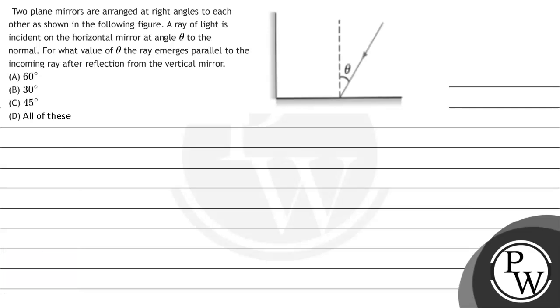Hello, let's read the question. The question says, two plane mirrors are arranged at right angles to each other as shown in the following figure. A ray of light is incident on the horizontal mirror at an angle theta to the normal. For what value of theta does the ray emerge parallel to the incoming ray after reflection from the vertical mirror?